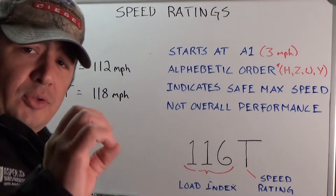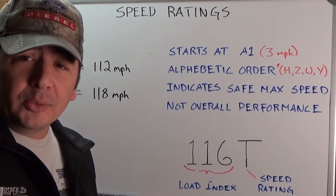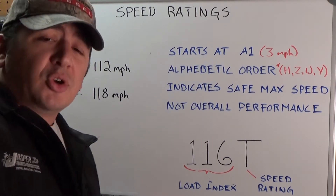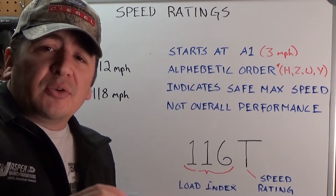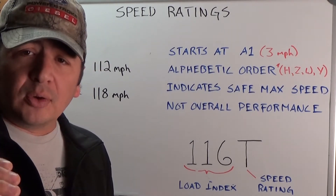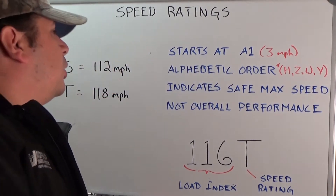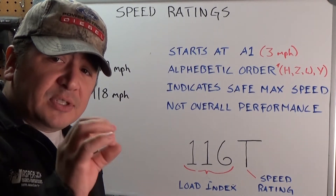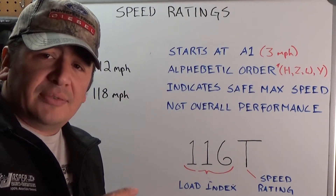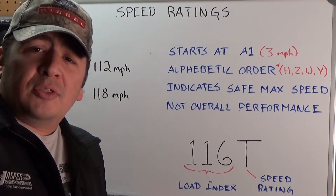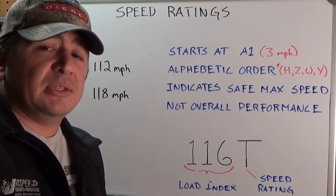Speed ratings — they're alphabetical, they're letters — and they start at A1, which is 3 miles an hour. That is not included in most of the charts that you see. Most charts are going to start at L and end at Y or Y in parentheses. All of the speed ratings are incrementally higher and alphabetical in order, except for H, Z, W, and Y, and then Y in parentheses also. The speed rating indicates the maximum safe speed that the tire can travel at. With higher speed capabilities, you're going to have tires that probably have stickier tread or grip on the road, less tread life, and they're going to be higher performance tires, but the speed rating itself is not a performance indicator. It only indicates the maximum speed that tire can travel at.